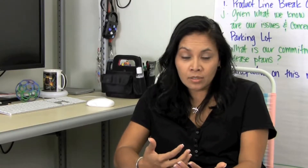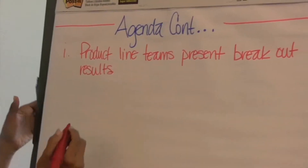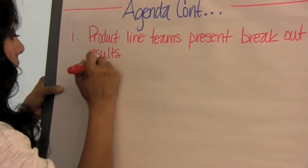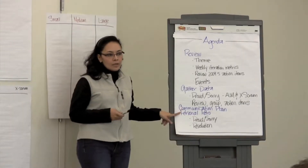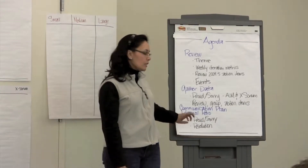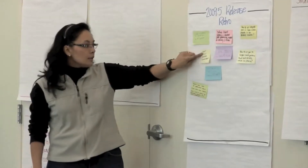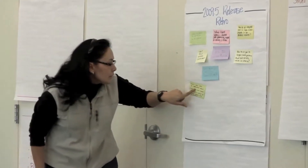As a Scrum Master for Rally, I facilitate the release planning meeting. The key to having a smooth release planning meeting is preparation, and it takes a lot of effort. I've learned a lot of lessons over the years. One of the steps I take is doing a retrospective with the team — discussing lessons learned from the previous release, taking actions to improve, and following up on those items in the next release. Sometimes those items become backlog items as well.